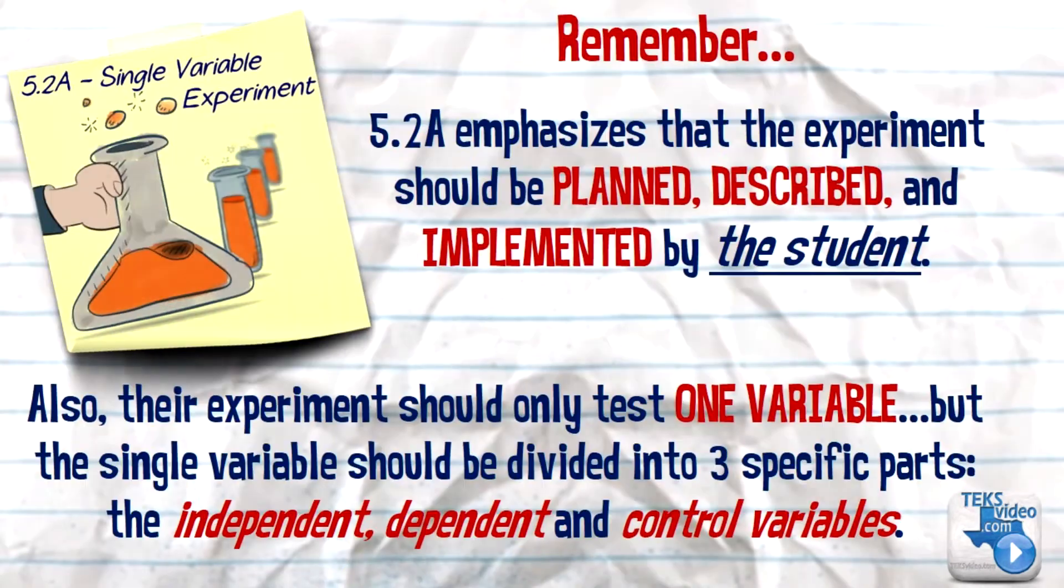Remember, 5.2a emphasizes that the experiment should be planned, described, and implemented by the student. Also, their experiment should only test one variable. But the single variable should be divided into three specific parts: independent, dependent, and control variables.